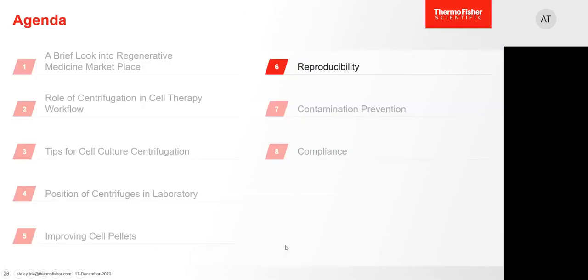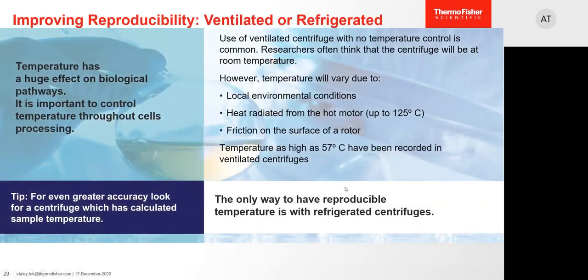Reproducibility is a critical factor that must be assured. One key feature that can help is refrigeration. While room temperature doesn't present risk for some applications, for most it does. Ventilated centrifuges can heat up to very high temperatures that can risk your experimental success. Factors such as how many centrifuges are in the laboratory, and how often and how long they are used, are important — especially for ventilated units. With a refrigerated centrifuge, you have the tools to minimize and control such temperature rises.